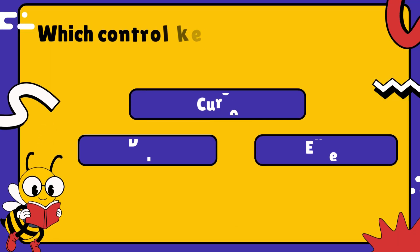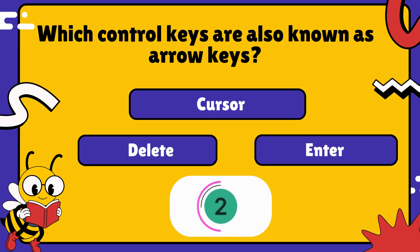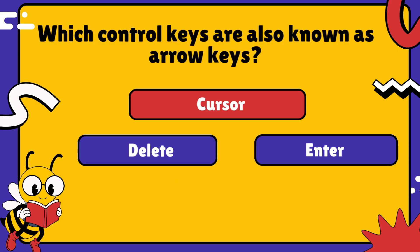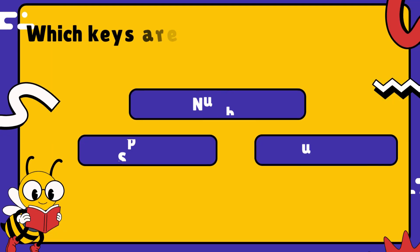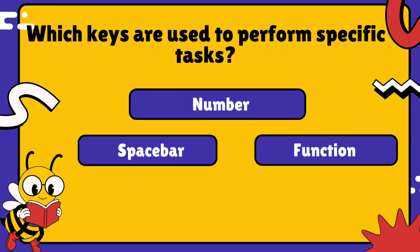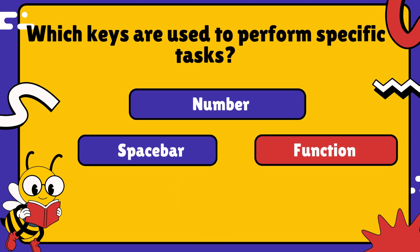Which control keys are also known as arrow keys? That's right — cursor control keys. Which keys are used to perform specific tasks? Absolutely right — the function keys.